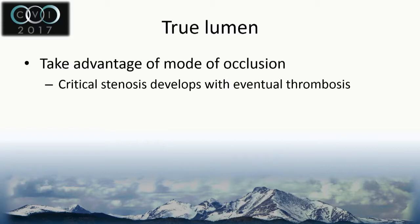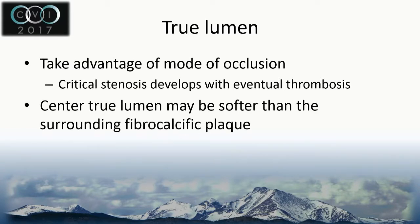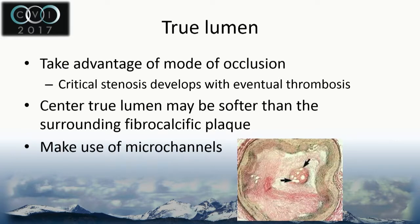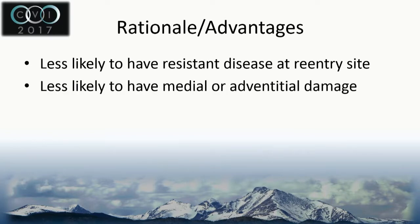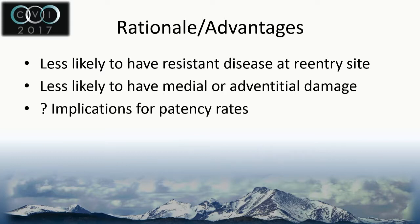Trulumen crossing takes advantage of the mode of occlusion. Typically you have a critical stenosis that eventually occludes with thrombosis. The central trulumen may be softer than the surrounding fibrocalcific plaque, and we're making use of the microchannels in the trulumen. Potential advantages include less resistant disease at the re-entry site and less medial or adventitial damage. The question is whether this has implications on patency rates, and I haven't seen a lot of good data showing that subintimal or adventitial damage necessarily negatively affects patency.